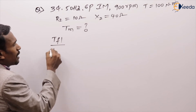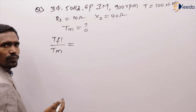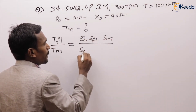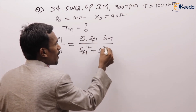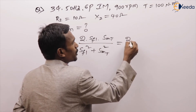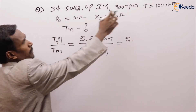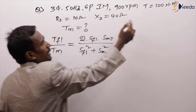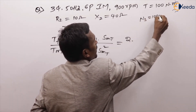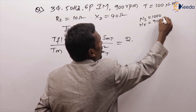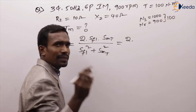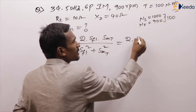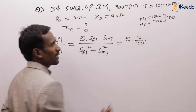The formula: full load torque to maximum torque = 2 × S_FL × S_MT / (S_FL² + S_MT²). The synchronous speed is 1000 RPM, rotor speed is 900 RPM, so slip = 100 RPM, which is 10% of 1000 — S_FL = 0.1.